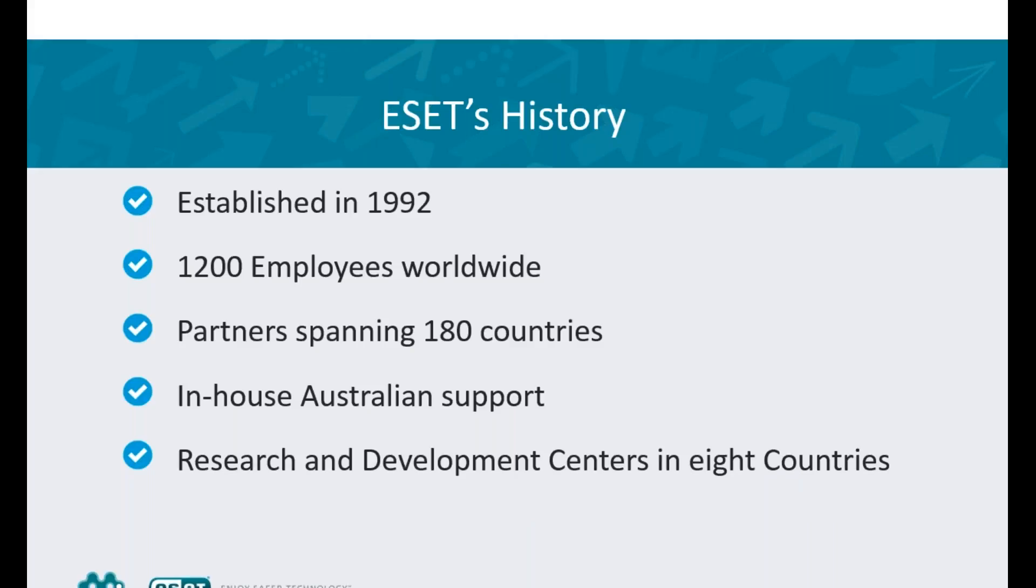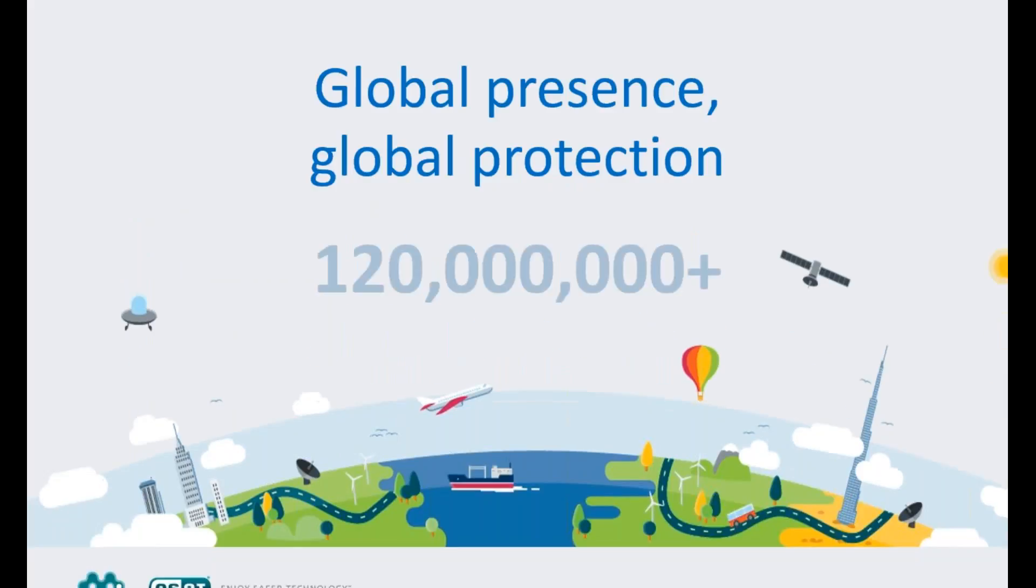I'd like to give you a quick overview of ESET's history. ESET was established in Slovakia in 1992 and has over 1,200 employees now worldwide. They have partners in 180 countries with research and development centers across eight countries. ESET only came to Australia in 2015 and now has offices in Sydney and Melbourne with expansion plans nationally. ESET has a fully staffed Sydney-based dedicated support center.